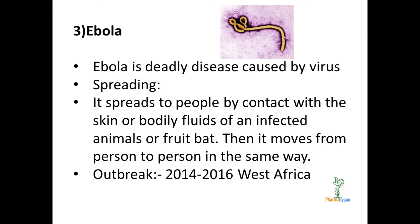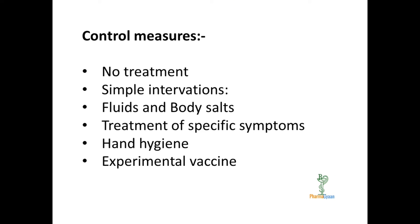The first Ebola virus disease outbreak occurred in remote villages in central Africa near tropical rainforests. The 2014 to 2016 outbreaks in West Africa were the largest and most complex. There is no specific prevention or treatment, but simple early interventions can significantly improve chances of survival, including fluids and body salts given orally or intravenously, and treatment of symptoms such as low blood pressure, vomiting, diarrhea, and infections.